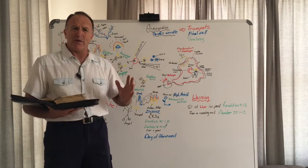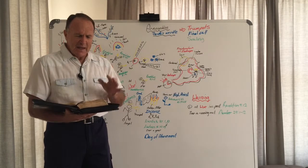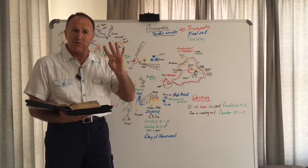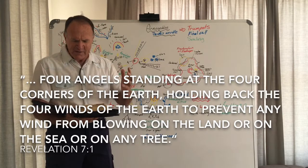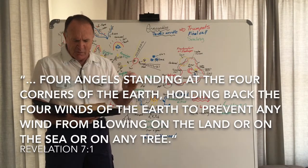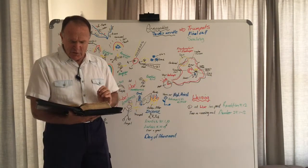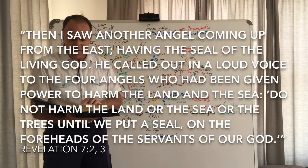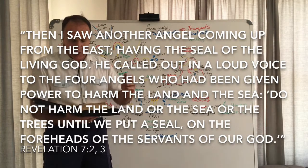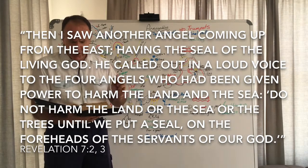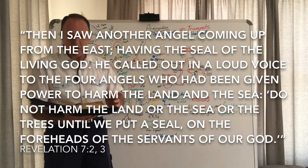From 1844, people were not ready for the coming of Jesus Christ. In Revelation chapter 7, we are introduced to four angels standing on the four corners of the earth, holding back the four winds to prevent any wind from blowing on the land or on the sea or on any tree. Then another angel came from the east, having the seal of the living God. He called out to the four angels, Do not harm the land or the sea or the trees until we put a seal on the foreheads of the servants of our God.